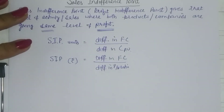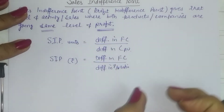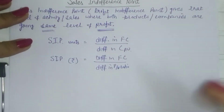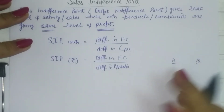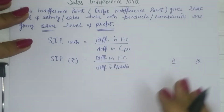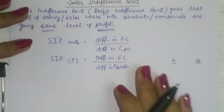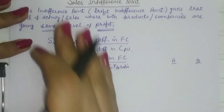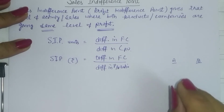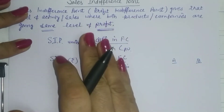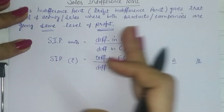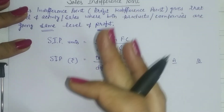This gives you the level of activity where both options are giving you the same profit. Suppose you have two product lines and you need to decide which one to continue — A or B. It is a matter of choice. Unlike the optimum product mix application of CVP analysis where you choose some units of A and some of B, in sales indifference point we are not making a mix — we have a clear-cut choice between either A or B.